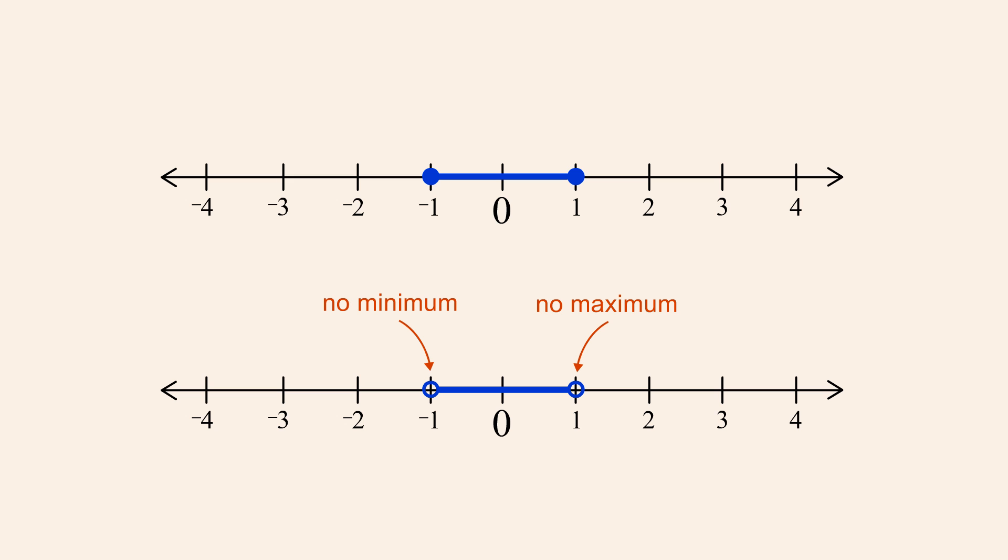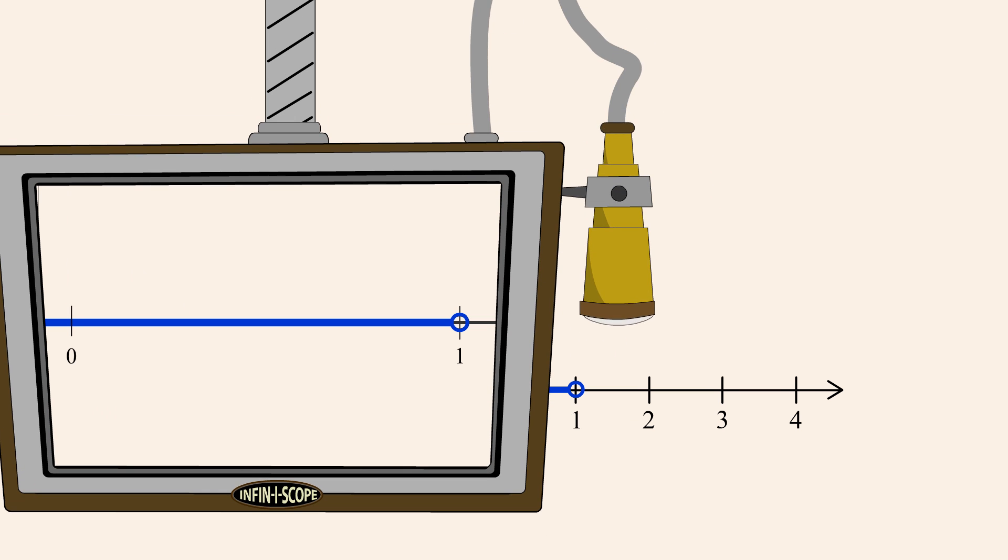To see why, let's take a closer look at an open interval. This interval's right endpoint is the number 1. However, since 1 is not included in the interval, in order to find the maximum number in this interval we must find the largest number less than 1.